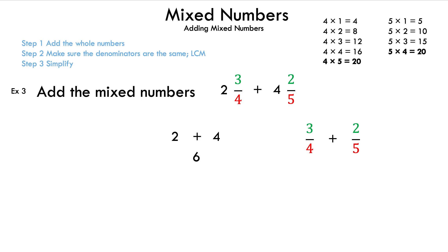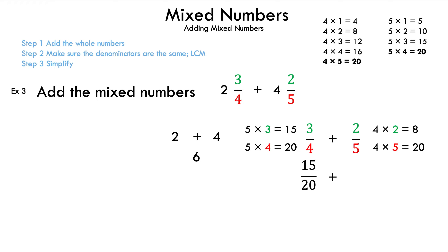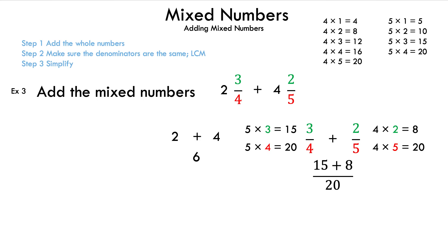Since our new common denominator is 20, we need to make the 4 into 20, and in order to do that we multiply by 5. So we multiply the top and bottom by 5: 5 times 3 is 15, and 5 times 4 is 20 — that is our new fraction, 15/20. Now we do the same process to the 2/5, multiplying the top and bottom by 4, because 4 times 5 is 20, and 4 times 2 is 8 — that is our new fraction, 8/20. Since we have a common denominator, we add the numerators 15 and 8, and the result is 23/20.